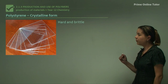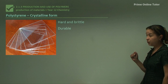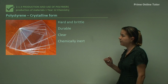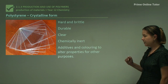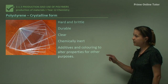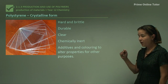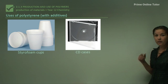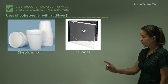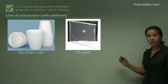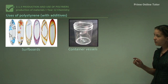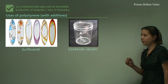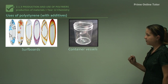The crystalline form of polystyrene is hard and brittle, durable, clear, and chemically inert, which means it has low reactivity. Additives and colouring are added to change the properties of crystalline polystyrene depending on what we want to use it for. Some examples of uses: styrofoam cups (foam form), CD cases (crystalline form), surfboards (foam form — though these days they tend to use graphite fibres and fibreglass), and container vessels (crystalline form).